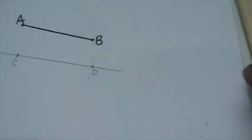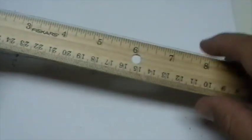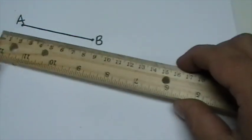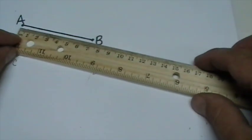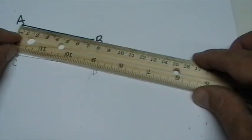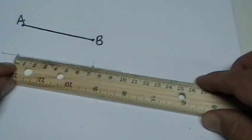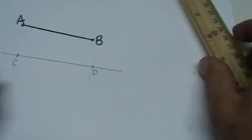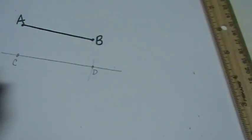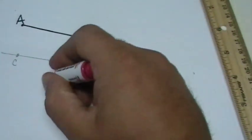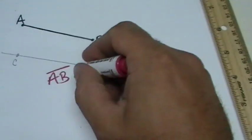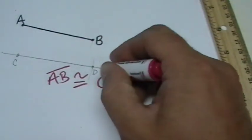If we would like to verify, we can measure these two line segments. We see that from A to B is seven centimeters, and we can say that AB is congruent to CD.